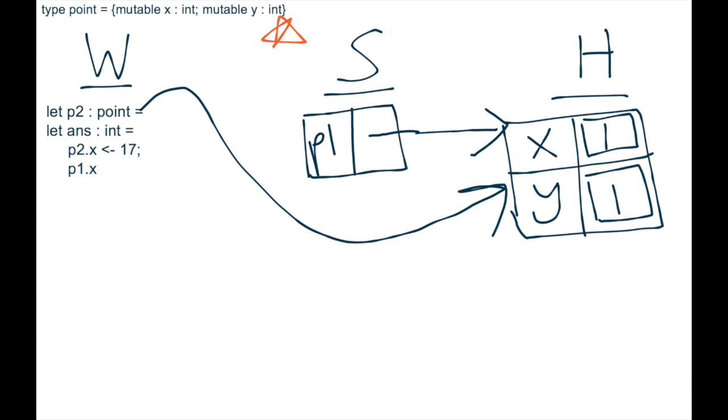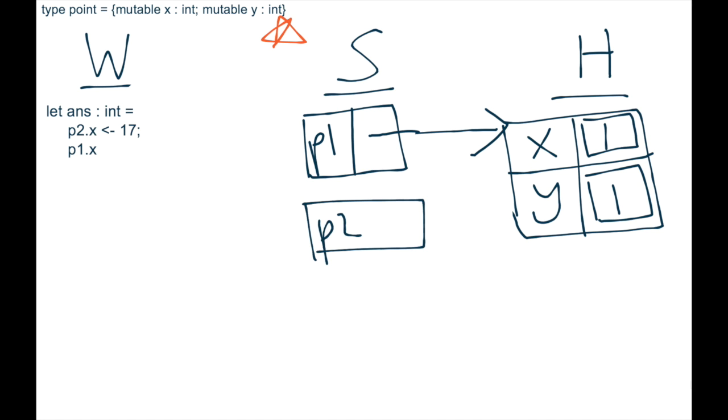So now this let expression is ready, so we can make a binding on the stack, and then take that line off the workspace. So we make P2, and we make it point to this location, and we can keep going.